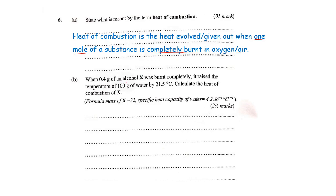When 0.4 grams of an alcohol X was burnt completely, now we are somehow looking at heat of combustion. It raised the temperature of 100 grams of water by 21.5 degrees Celsius. Calculate the heat of combustion of X.